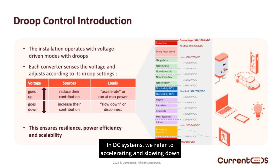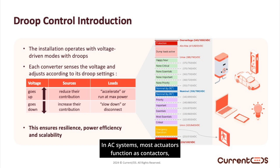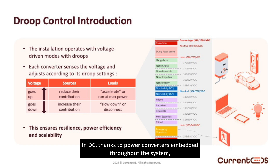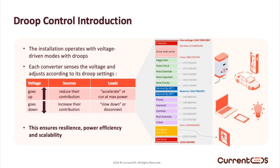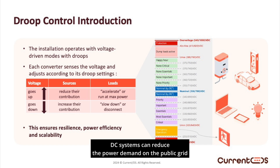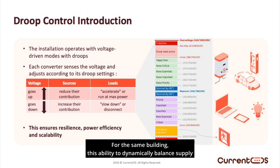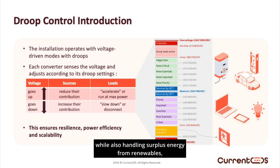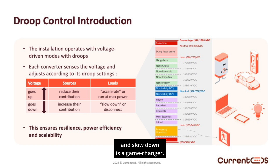In DC systems, we refer to accelerating and slowing down to describe the dynamic adjustments of power flow. This highlights a key difference between AC and DC. In AC systems, most actuators function as contactors, toggling between on and off — think about the day-night switch for a water heater: it's either on or off. In DC, thanks to power converters embedded throughout the system, every source and load effectively has its own variable speed controller, allowing for gradual, precise adjustments. By continuously adjusting sources and consumers, DC systems can reduce the power demand on the public grid by at least half, and sometimes up to five times, drastically lowering the required power at the grid connection point. In a world where public grids struggle to meet the rising demand for EV charging while also handling surplus energy from renewables, having a system that can continuously accelerate and slow down is a game-changer.